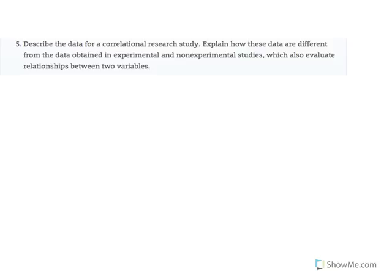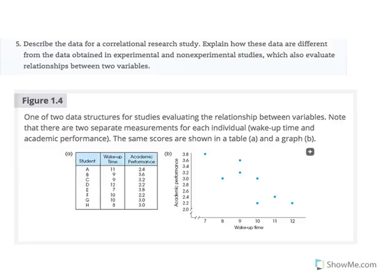Let's look at Figure 1.4 to see what a correlational study looks like. Here we have one group of students, A through H. Each student reported the average time they wake up and their academic performance, which in this case is measured as GPA.